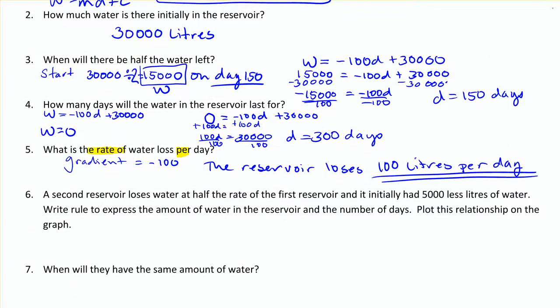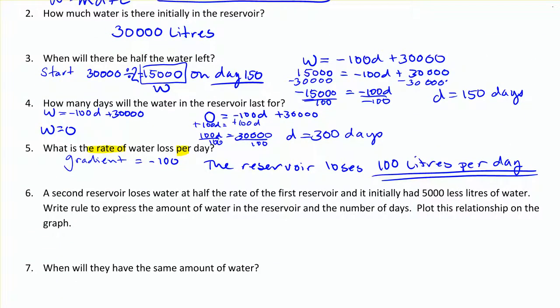So a second reservoir loses water at half the rate of the first reservoir and it initially had 5,000 less liters of water. They want us to write a rule to express the amount of water in the reservoir and the number of days and then plot this on the graph.